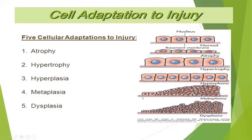Cellular adaptations to injury. There are five cellular adaptations to injury: atrophy, hypertrophy, hyperplasia, metaplasia and dysplasia. Atrophy is the decrease in cell size and hypertrophy is the increase in cell size. Hyperplasia is an increase in cell number. Metaplasia is the conversion of one cell type to another, and dysplasia is disorderly growth.